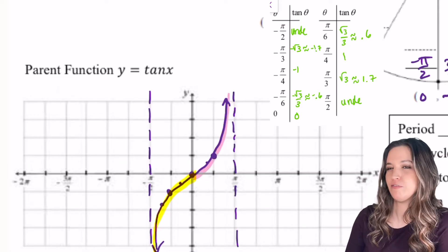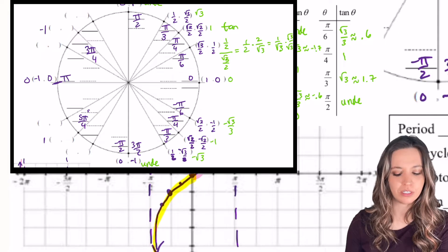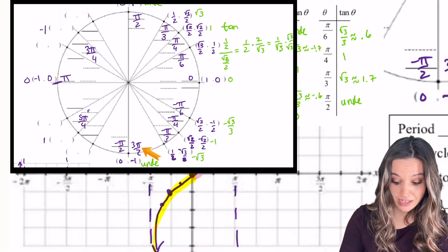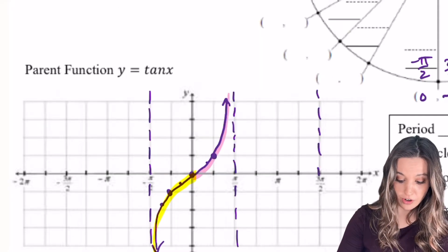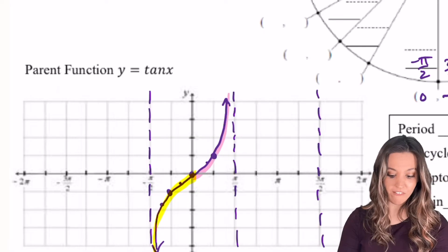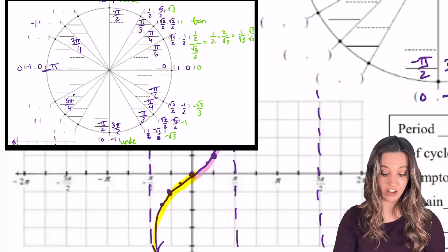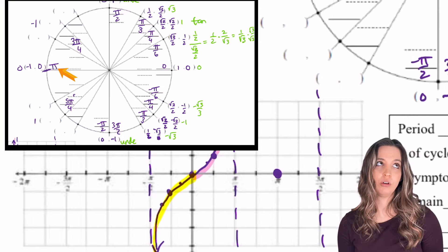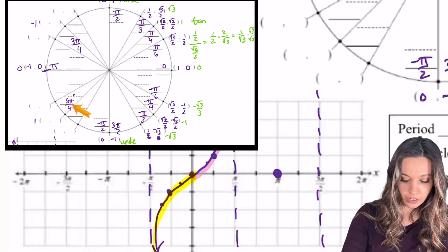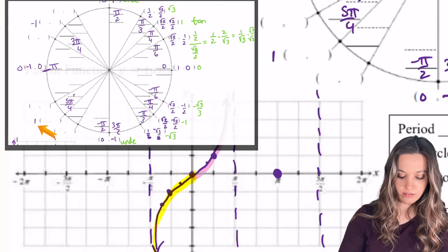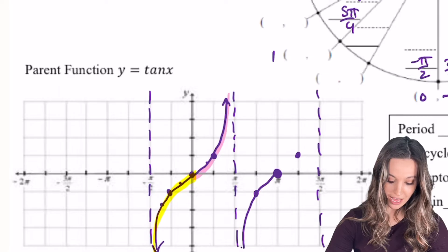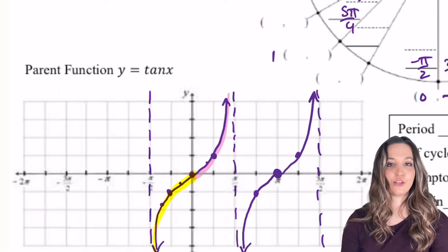Let's keep graphing in the positive direction. When would we hit another vertical asymptote? Tangent at pi is 0. Tangent at 3 pi over 2 is undefined again, so I know at 3 pi over 2 I have another vertical asymptote. We know from the unit circle that our values repeat. So if I wanted to graph more tangent values in between here, I know that at pi tangent is 0, at 3 pi over 4 tangent is negative 1, and at 5 pi over 4 tangent is positive 1. Concave down from pi over 2 to pi and concave up from pi to 3 pi over 2.